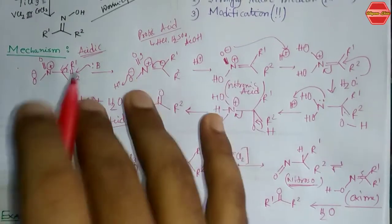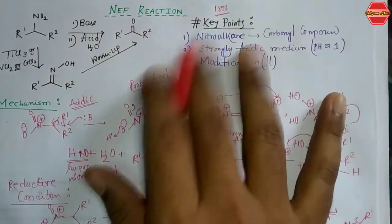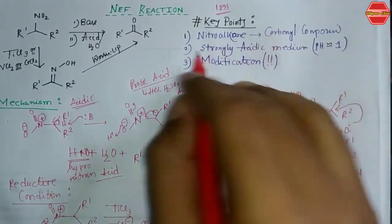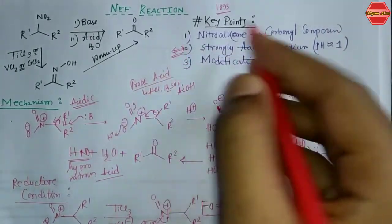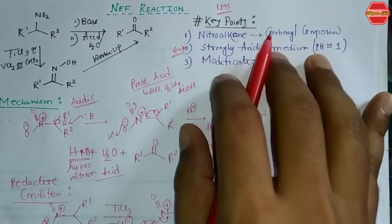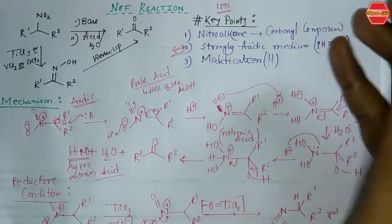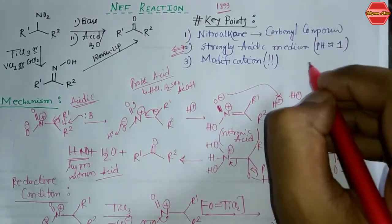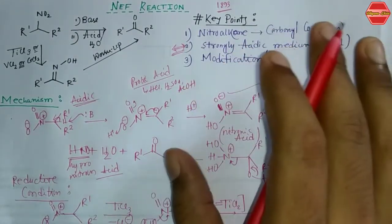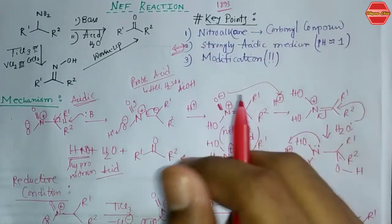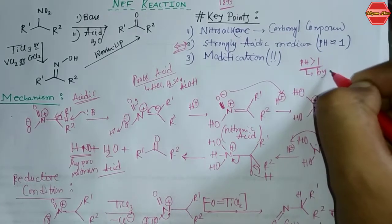Overall, the Neff reaction proceeds via two mechanisms: acidic condition and reductive condition. Key points to remember: from a nitroalkane you get a carbonyl compound, and a strongly acidic medium is required — pH must be nearly less than one. If the pH is greater than one, simultaneous byproduct formation occurs.